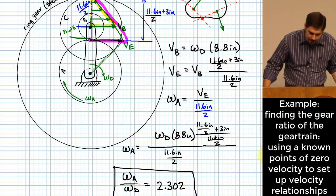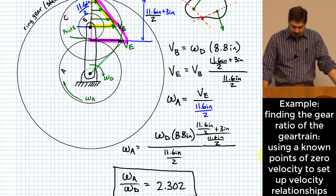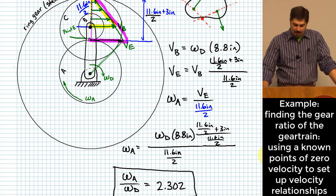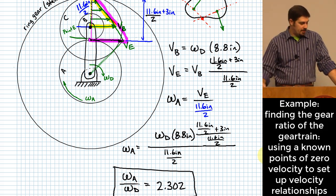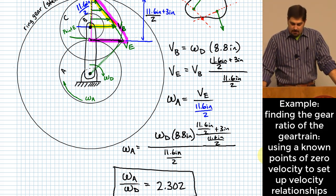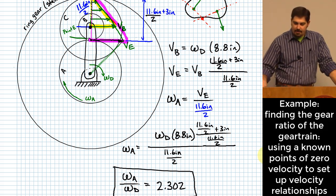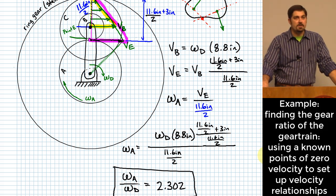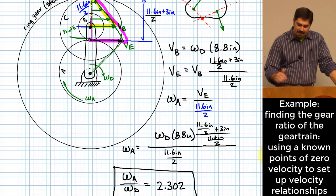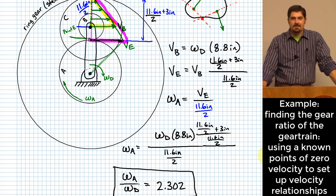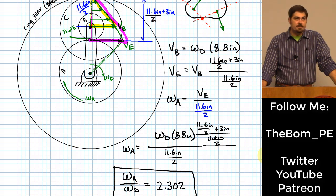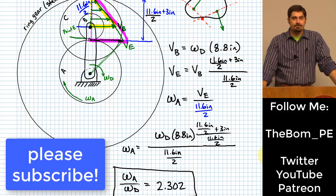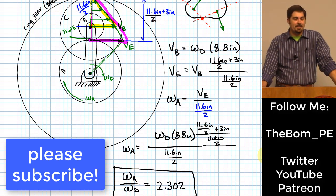So the number of turns of shaft A for each turn of shaft D is 2.302. If you wanted the inverted relationship you could take the reciprocal. Trying to memorize the epicyclic gear train formulas from textbooks hasn't worked well for me, but using this instantaneous-center kinematics technique has pretty much always worked. I wanted to share it with you in case it's not something you would have thought of yourself. That's it for today — I'll see you Friday.